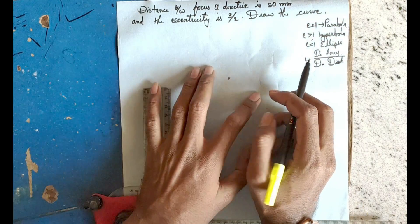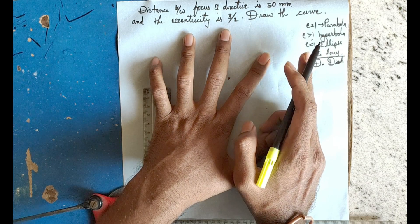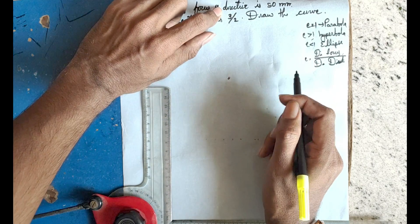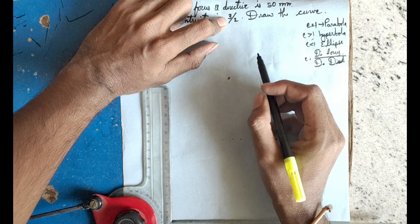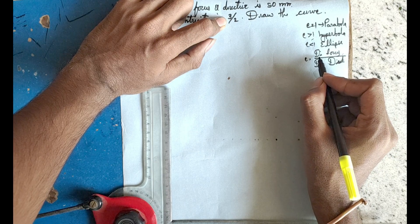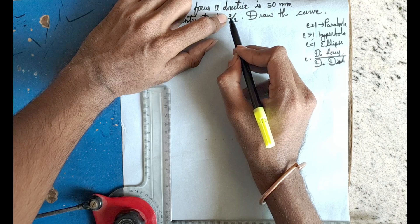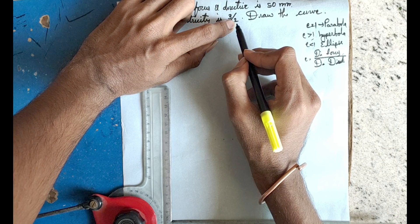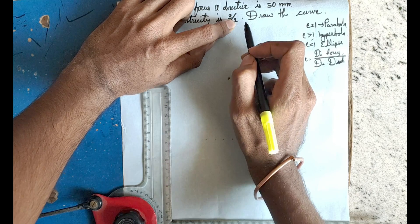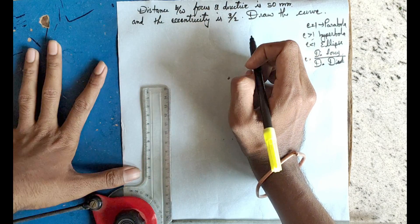We will calculate the eccentricity and the distance from the focus and the distance from the directrix. We will calculate the parts of the division and determine how to proceed with the construction.